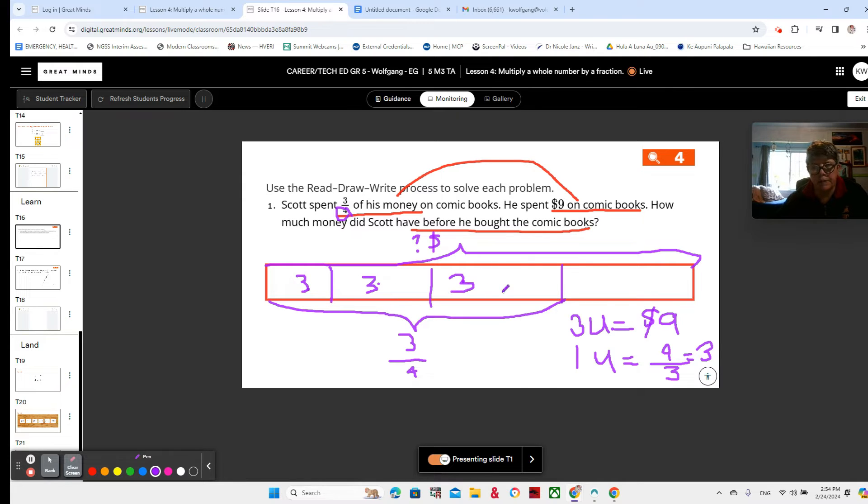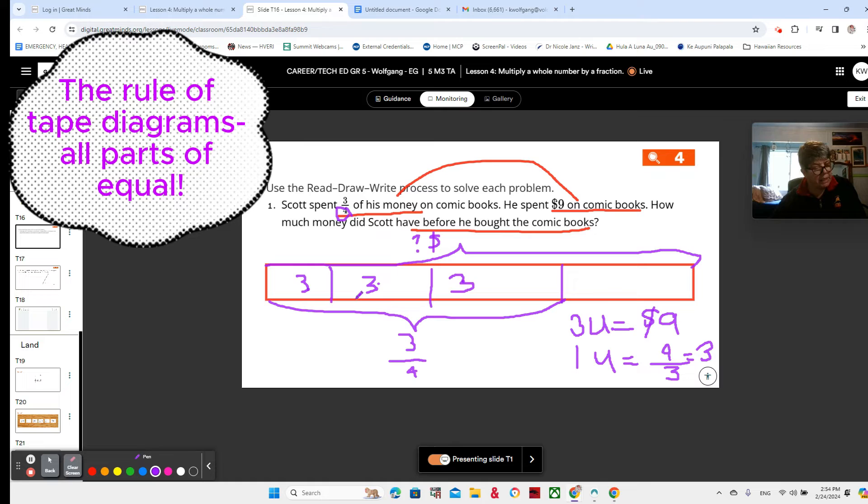So each of these is a three, because nine dollars divided by three. Now can we find out how much money he had before he bought the comic books? If this is a three and this is a three and this is a three, then this also has to be a three. And we can multiply three times four, which makes twelve. So now we know that he had twelve dollars before he bought the comic books.